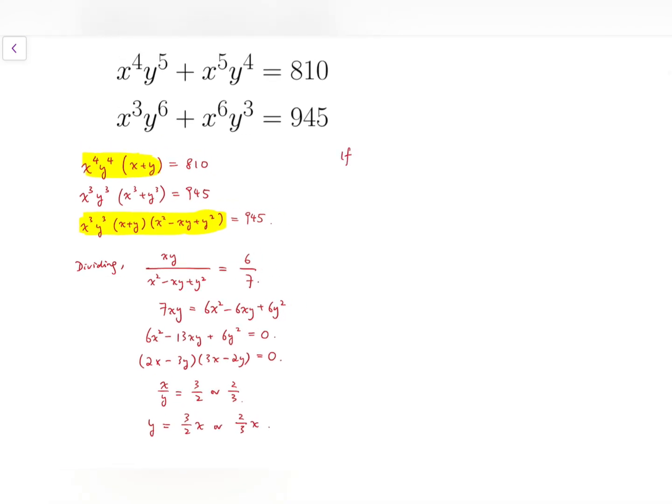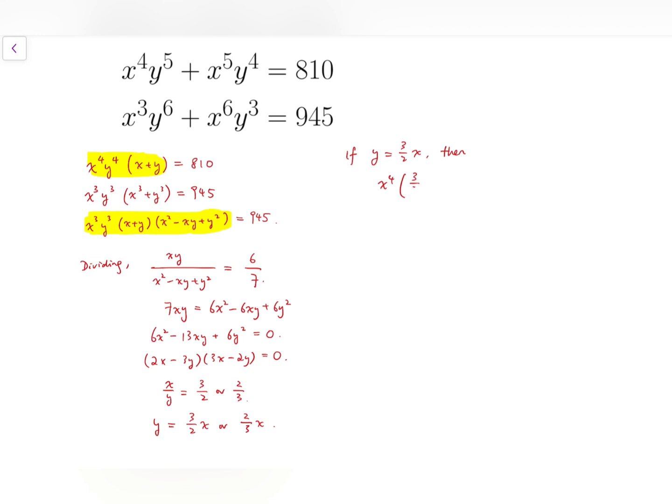If y equals 3 over 2x, then we put that back into both equations. I'll get x to the 4 times 3 over 2x all to the power 5 plus x to the power 5 times 3 over 2x all to the power 4 equals 810. You can see that I have x to the power 9 on both terms on the left-hand side.